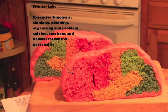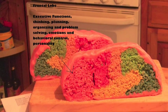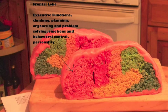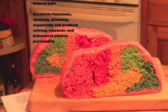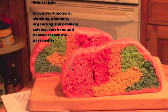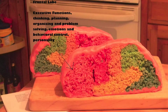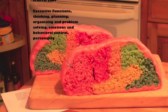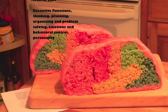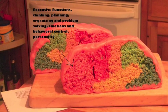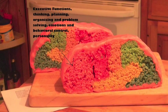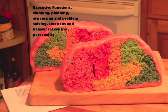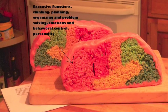Frontal lobe. The frontal lobes are large areas of the cerebral cortex located at the top front part of the brain, behind the eyes. Researchers believe this part of the brain is responsible for abstract thought and emotional control. The frontal lobe in the left hemisphere contains one of the two special areas responsible for language processing. The Broca's area is in the frontal lobe and is responsible for controlling the muscles involved in producing speech.